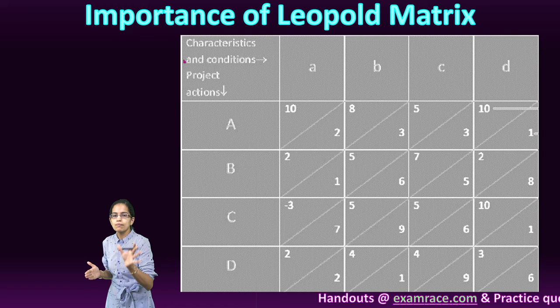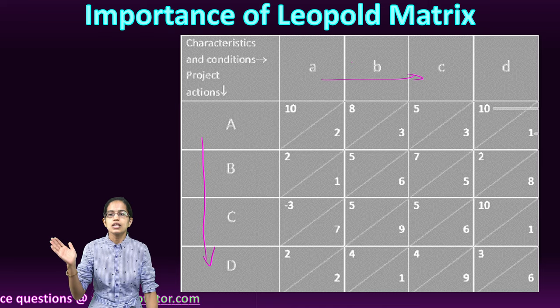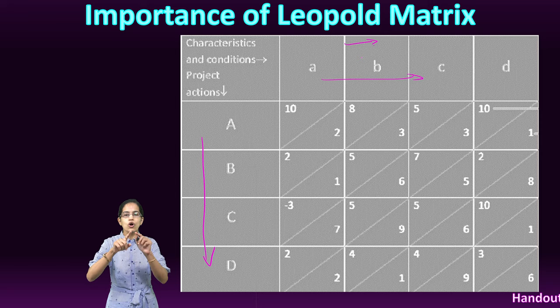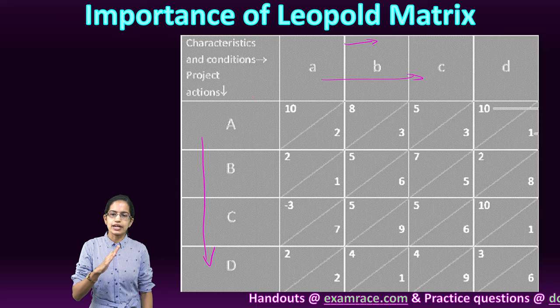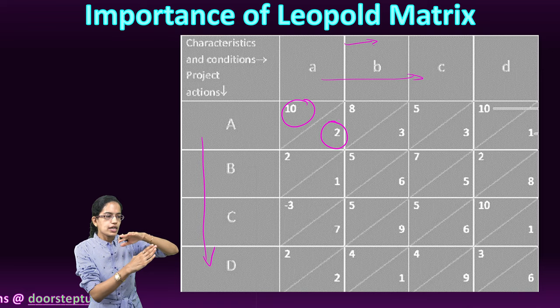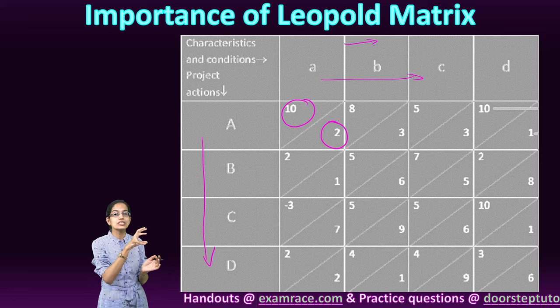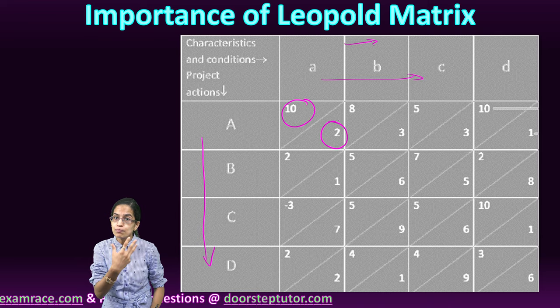A simple example of a Leopold Matrix shows a horizontal axis and a vertical axis. The vertical axis lists the project actions and the horizontal axis lists the characteristics and conditions. Each box within this matrix is diagonally divided into two sections: one is the magnitude and the other is the importance. The assessment of magnitude is done on factual information — we know how much impact it would have — but the assessment of importance has a subjective element. Subjective opinions could be part of the importance when focusing on a project.